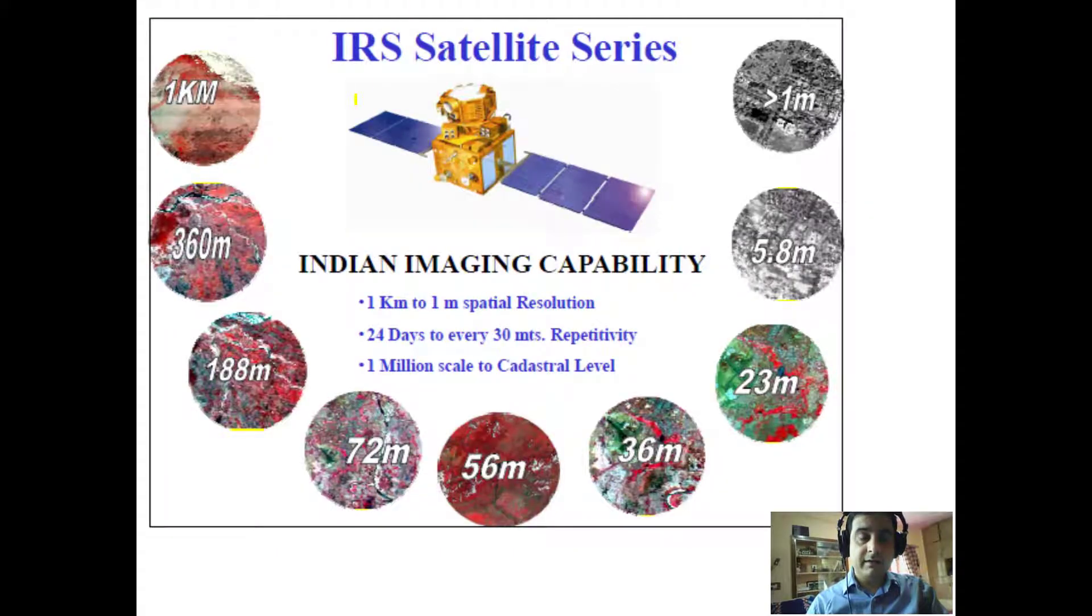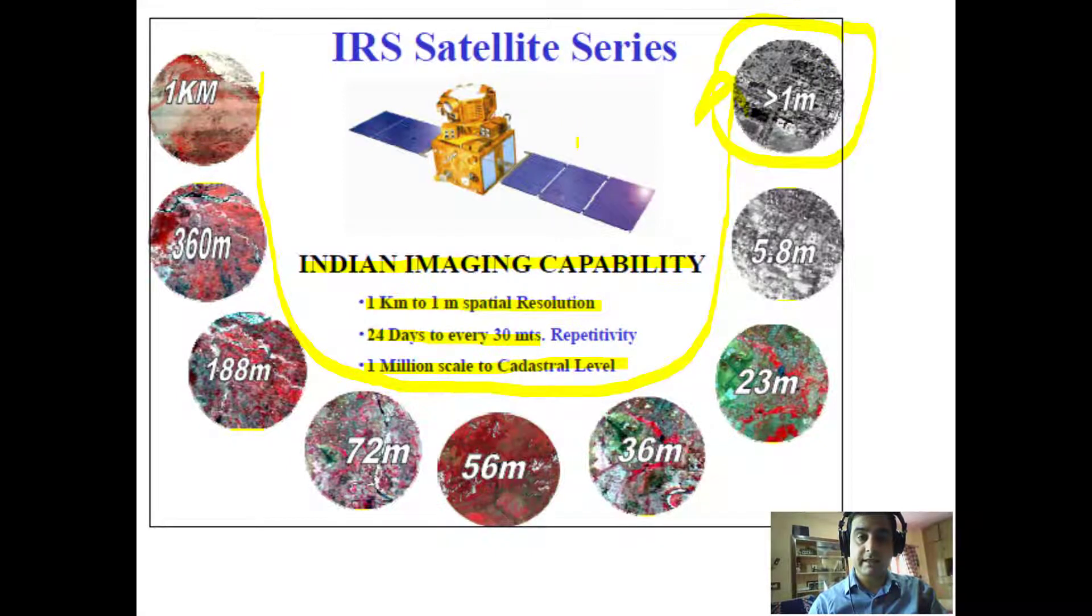Now the Indian remote sensing satellites have advanced in imaging capability from one kilometer to one meter resolution, and for the temporal resolution they have attained the repetitivity of 24 days to 30 minutes, and for mapping one million scale to cadastral level scale has been achieved. And you can see from one kilometer resolution, less than one kilometer resolution as on date is available with the Indian remote sensing satellites.